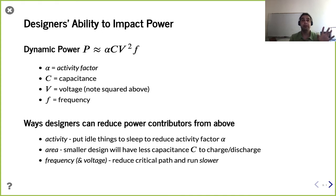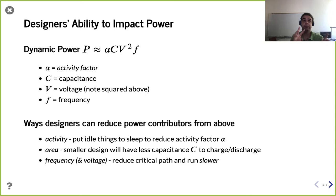First, the slide mentions dynamic power. Power consumption can be roughly categorized into static power and dynamic power. Static power includes things like leakage current at the circuit scale — things that are continuous and going on in the background. You might also think of it as always-on components, like a base controller that can never be turned off, even when other parts of the system are powered down.